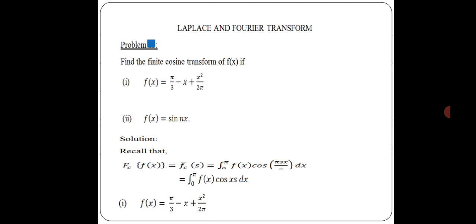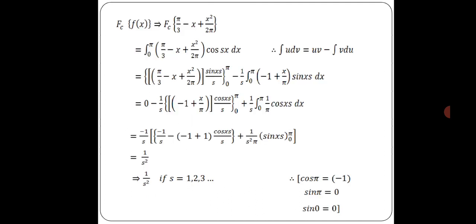The first problem solution: given f(x) = π/3 - x + x²/2π. Recall the formula: the finite cosine transform fc{f(x)} = integral from 0 to π of f(x) cos(sx) dx. So fc{f(x)} = integral from 0 to π of (π/3 - x + x²/2π) cos(sx) dx.